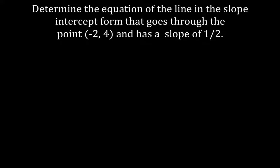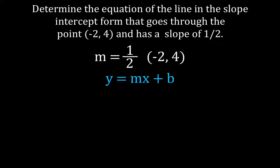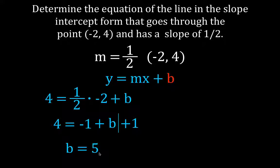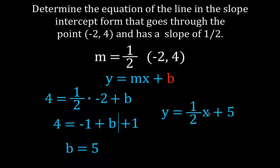One more example: the slope is 1 half and the point is (minus 2, 4). We need to find b. Plugging in: y is 4, so 4 equals 1 half times minus 2 plus b. 1 half times minus 2 is minus 1, so 4 equals minus 1 plus b. Add the opposite, plus 1: 4 plus 1 is 5, and minus 1 plus 1 is 0, so b equals 5. The equation of the line is y equals 1 half x plus 5.